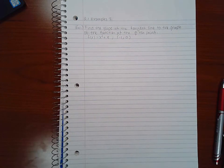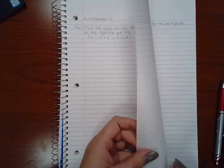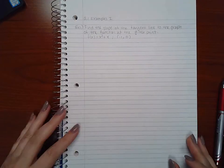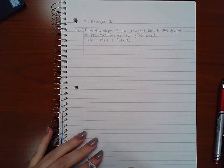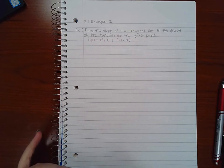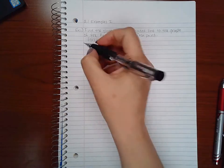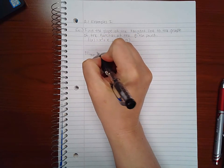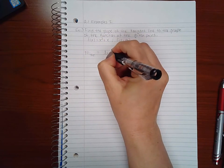Okay, in this video we will start with the first example of section 2.1. It says find the slope of the tangent line to the graph of the function at the given point. Now we know that the slope is given by this limit.